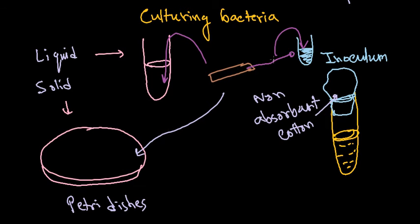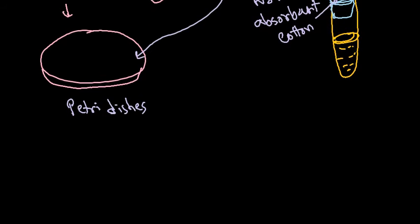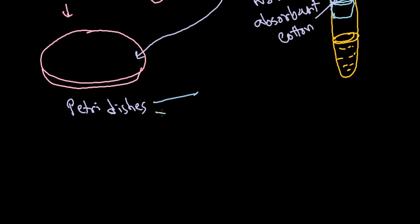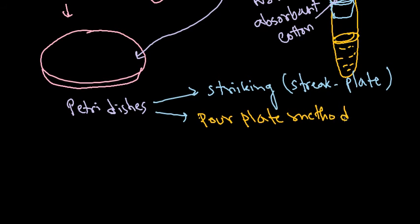For liquid media, you simply dip the loop into the inoculum, re-dip it into the liquid medium, and then incubate at a particular temperature for a particular period of time. For solid media, the types of culturing can be different. We have three methods: streak plate method, pour plate method, and spread plate method.